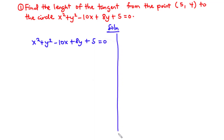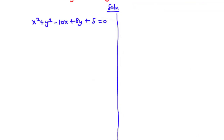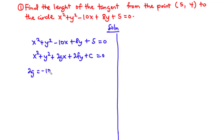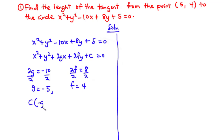We compare the equation x² + y² − 10x + 8y + 5 = 0 to the general equation x² + y² + 2gx + 2fy + c = 0. Comparing the x-coefficient: 2g = −10, so g = −5. Comparing the y-coefficient: 2f = 8, so f = 4. Since the center is (−g, −f), the center is (5, −4).